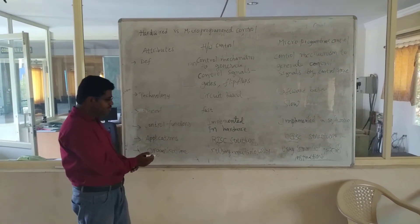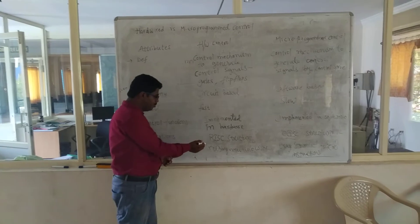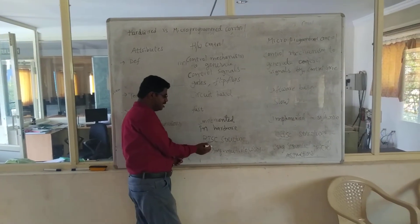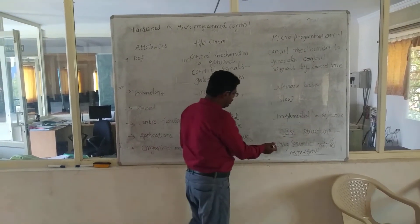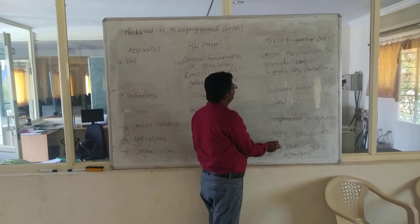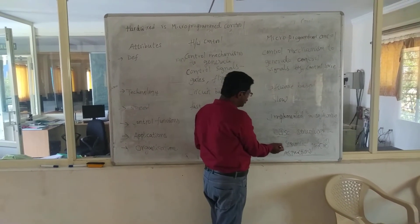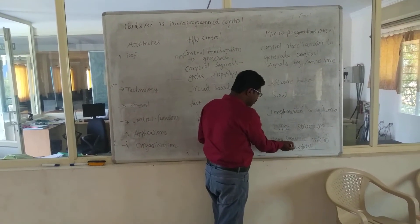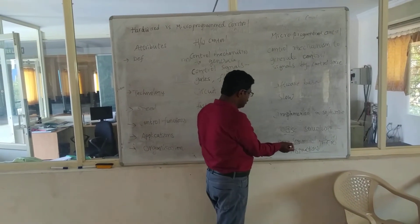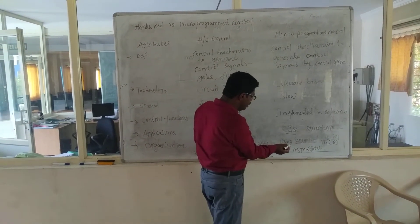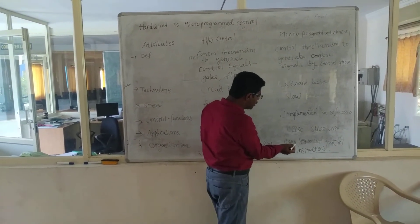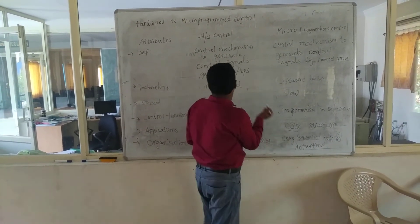Organization-wise, hardware control units are organized using multiple wires. But in microprogrammed control, these are organized using a sequence of micro instructions.